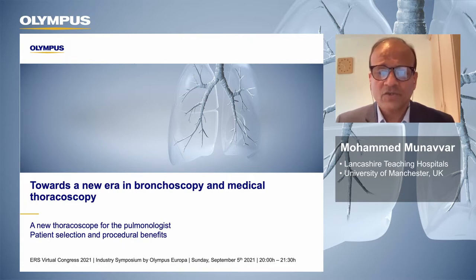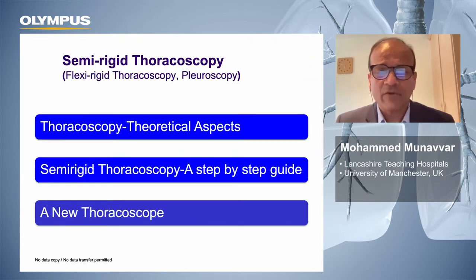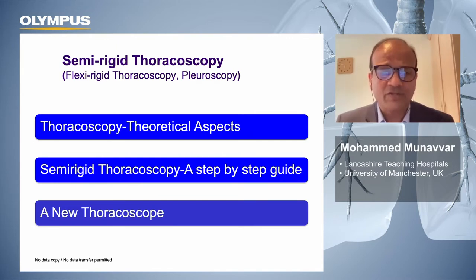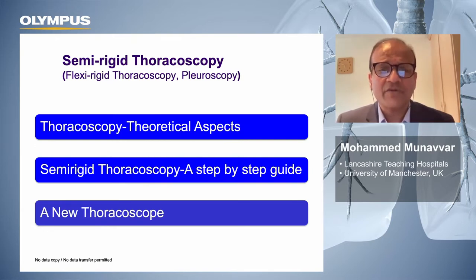I'm from Preston in the UK, and I'm going to cover this presentation under the following headings. First, I'm going to cover a few theoretical aspects, and then very briefly describe the practical step-by-step guide to semi-rigid thoracoscopy, addressing some specific tips and tricks of the procedure. Then we'll move on to talk about a novel thoracoscope that has been launched, focusing mainly on semi-rigid thoracoscopy, which is also called flexi-rigid thoracoscopy.